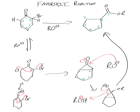The double bond has formed again in the one position, and this fragment has broke off and picked up a proton. So there's a new proton — I'll just draw a circle around it. And that is the Favorskii reaction.